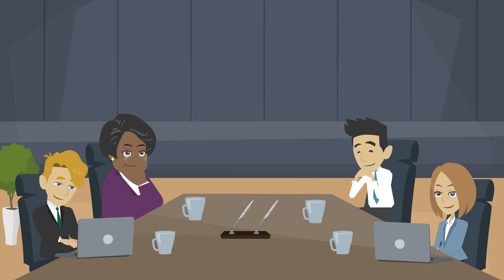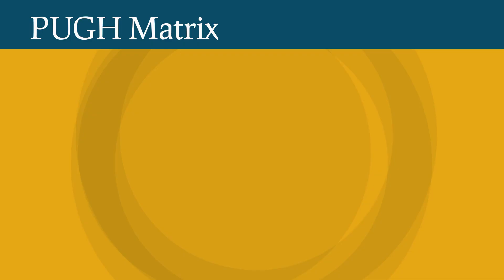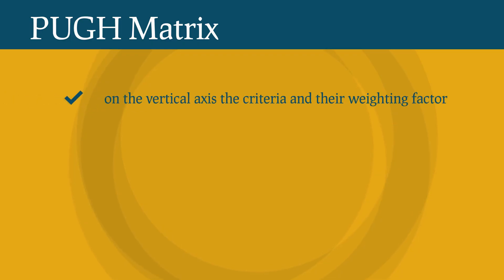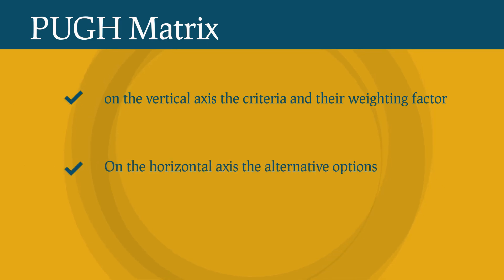The following is stated in the matrix: on the vertical axis, the criteria and their weighting factor; on the horizontal axis, the alternative options.